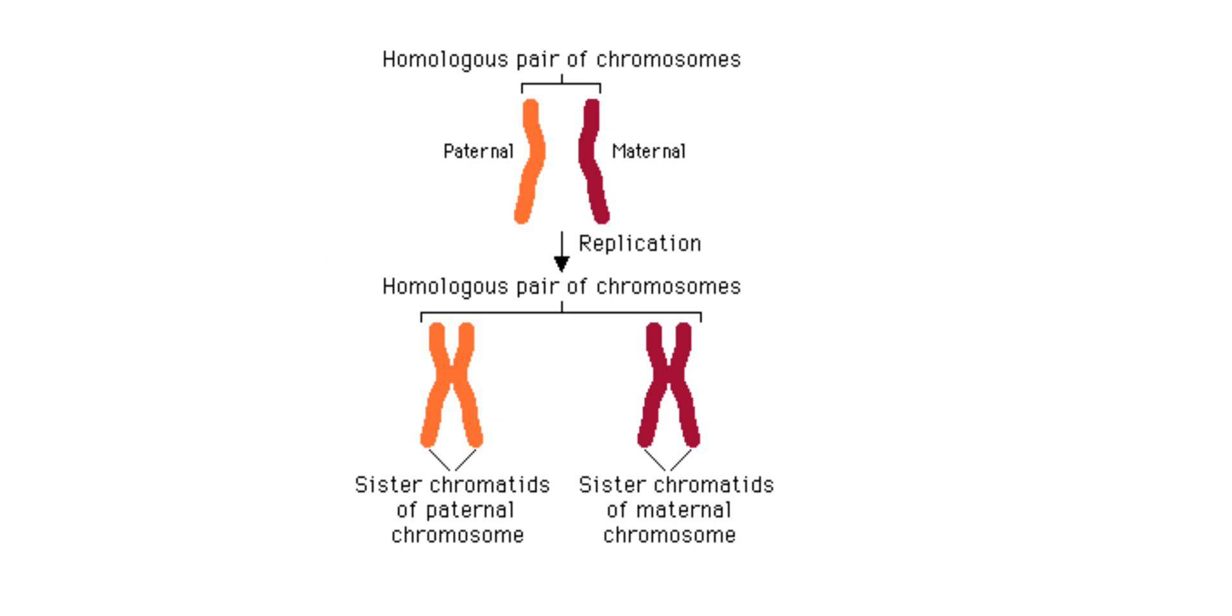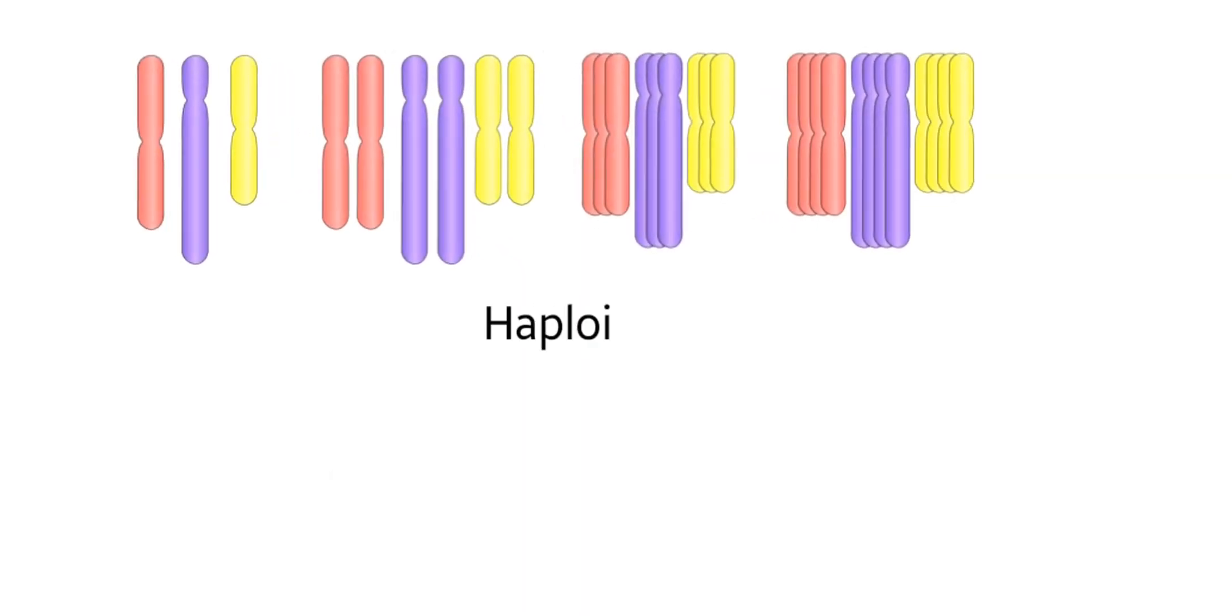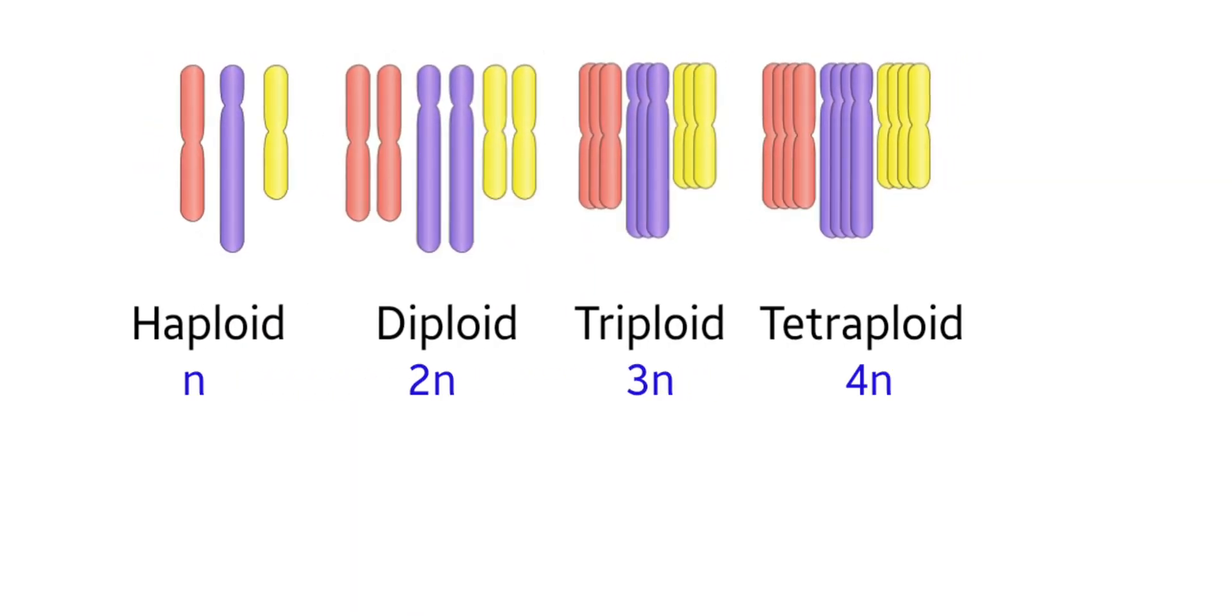One of these homologous chromosomes is inherited from father and the other is from the mother. So a child receives 23 chromosomes from father and 23 chromosomes from mother. Having one set of unpaired chromosomes is called haploid. For example, the gamete cells are haploid.